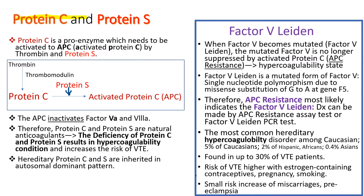Protein C and S are natural anticoagulants that inhibit factor V and factor VIII. Protein C is activated to activated protein C (APC) by protein S. So protein C and protein S work together in inhibiting factor Va and factor VIIIa. Therefore, deficiency of protein C and S results in a hypercoagulability condition, increasing the risk of venous thromboembolism.